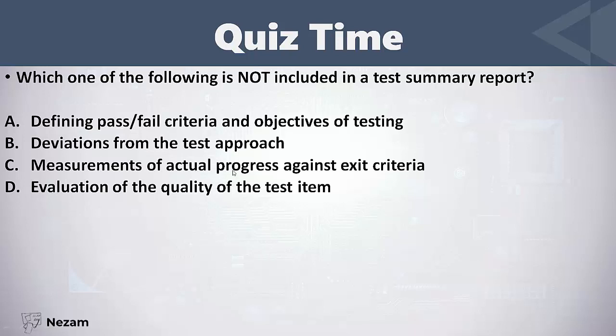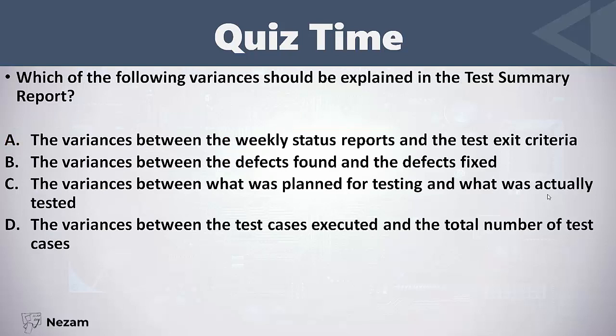Deviations from the test approach, measurements of actual progress against exit criteria, and evaluation of the quality of the test item — these three items are considered part of the test summary report. Which of the following variances should be explained in the test summary report?